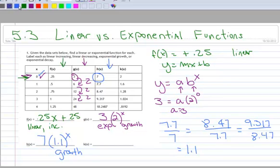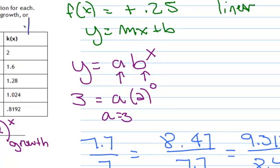And now let's do K of X. So K of X definitely is not increasing. So that must be decreasing somehow. So to go from 2 to 1.6, well, I could subtract 0.4. But then if I take 1.6 and subtract 0.4, that does not give me 1.28. So it's definitely not linear.